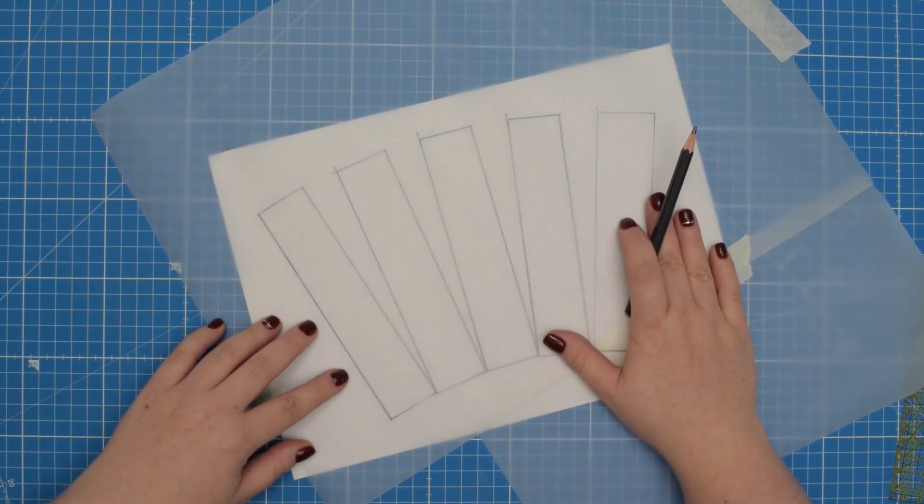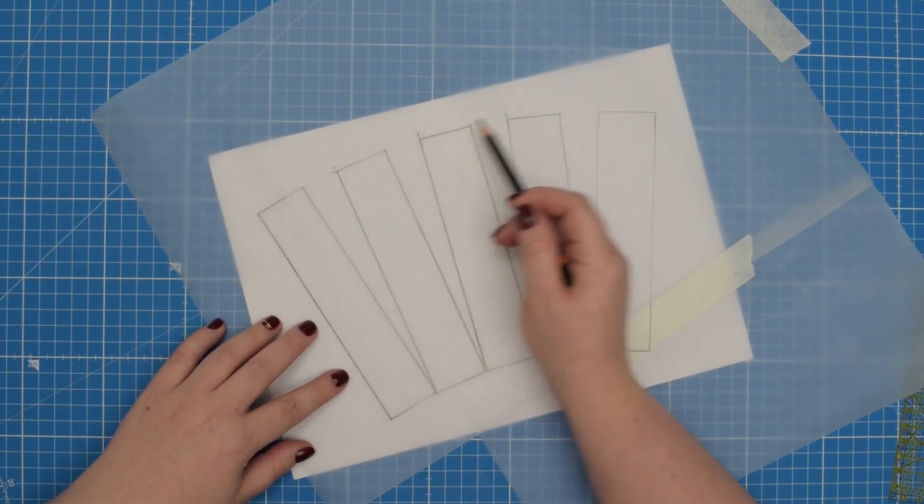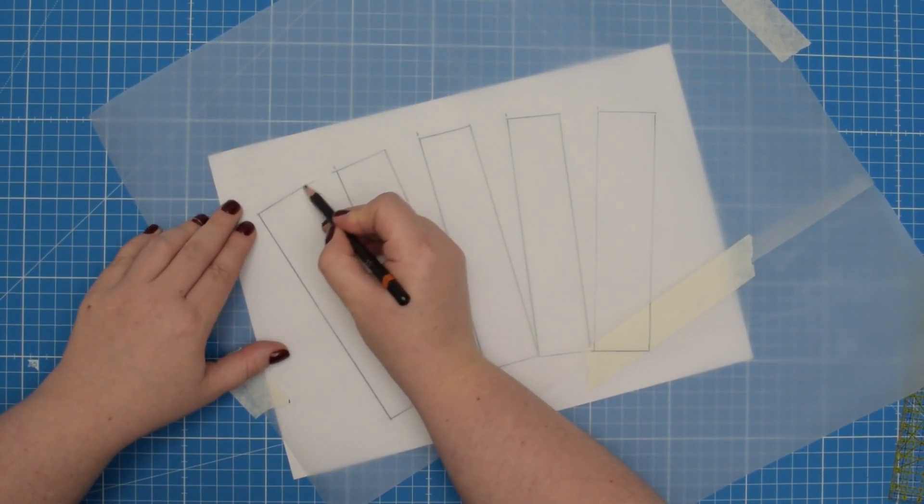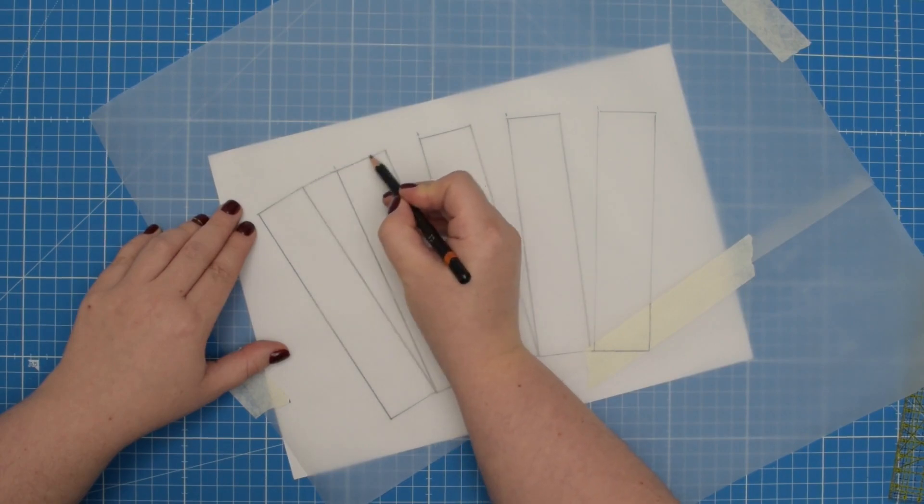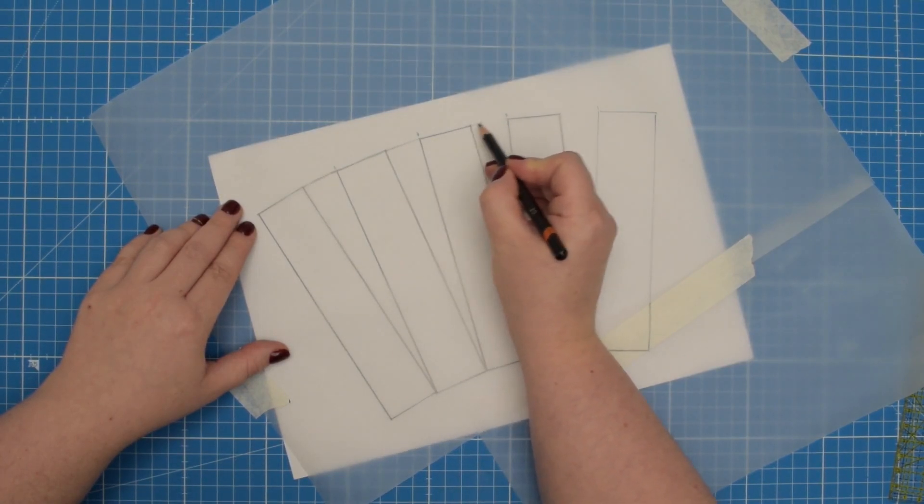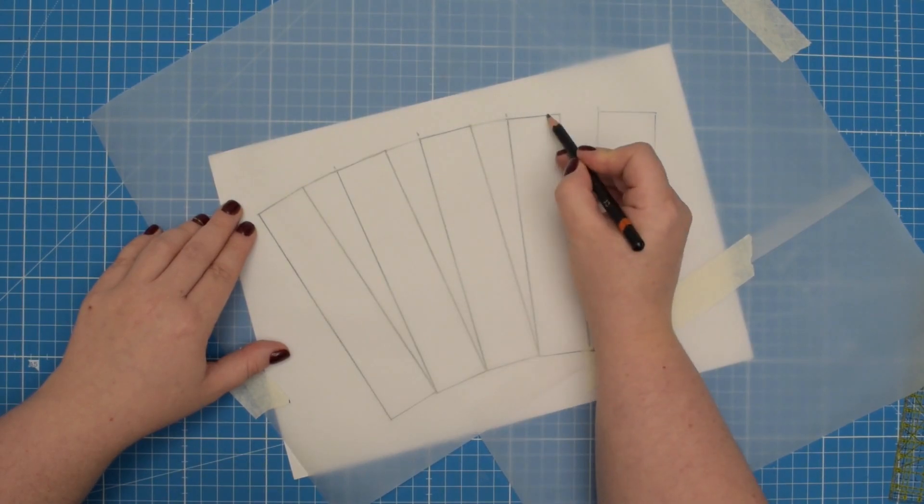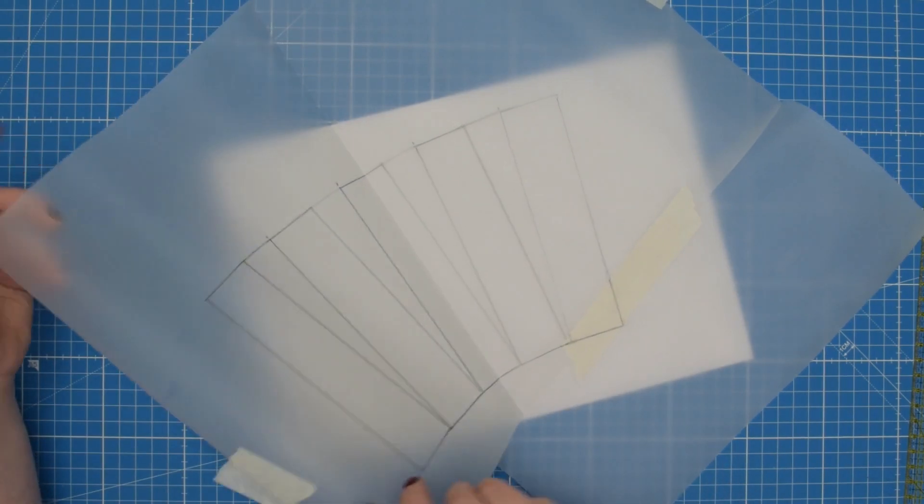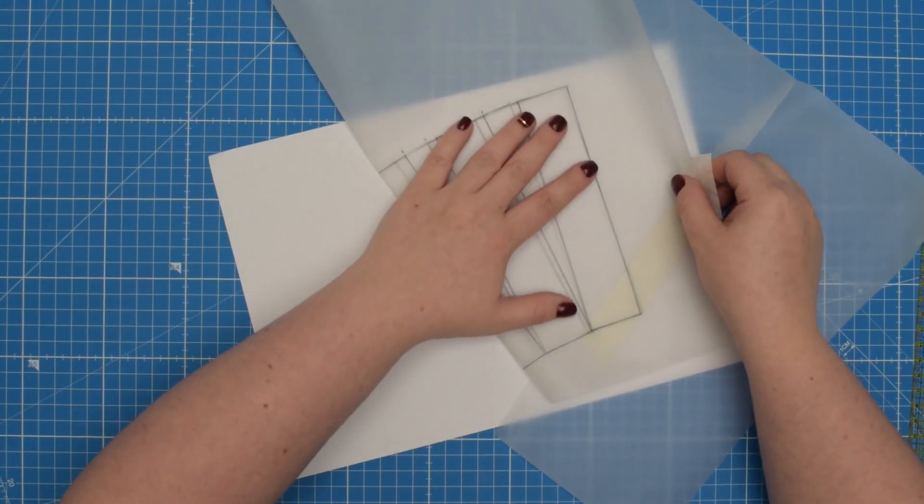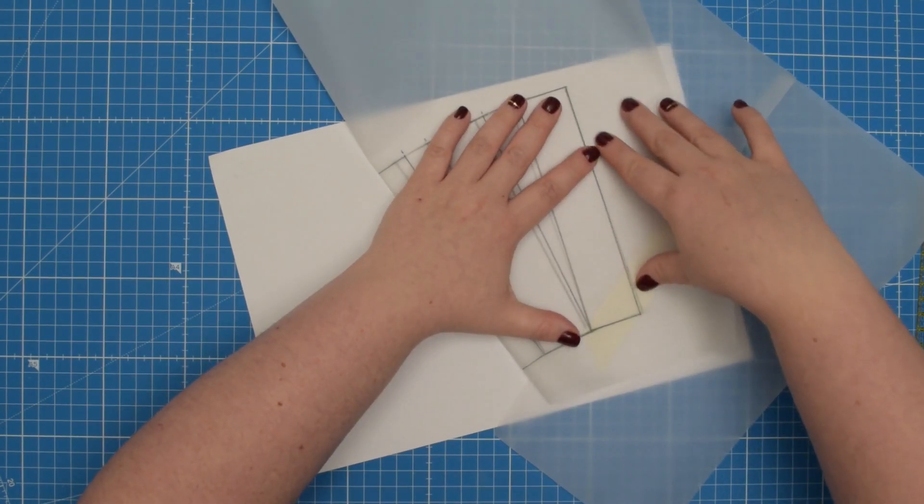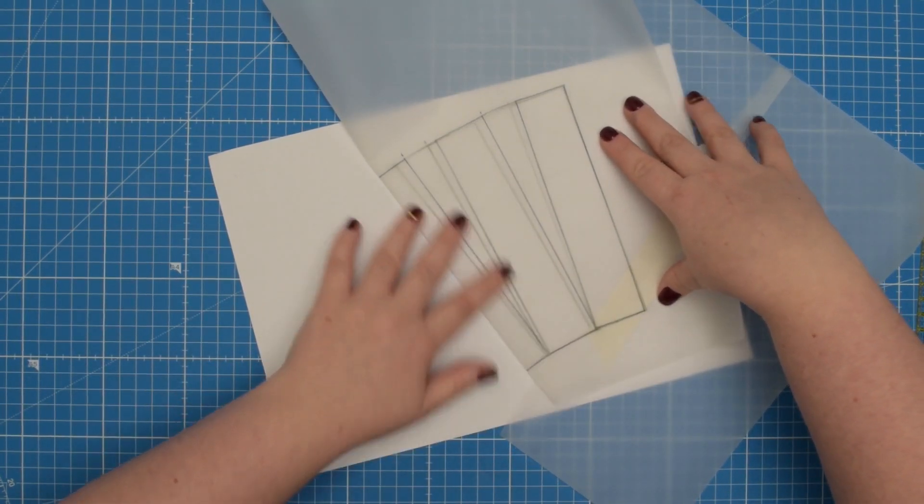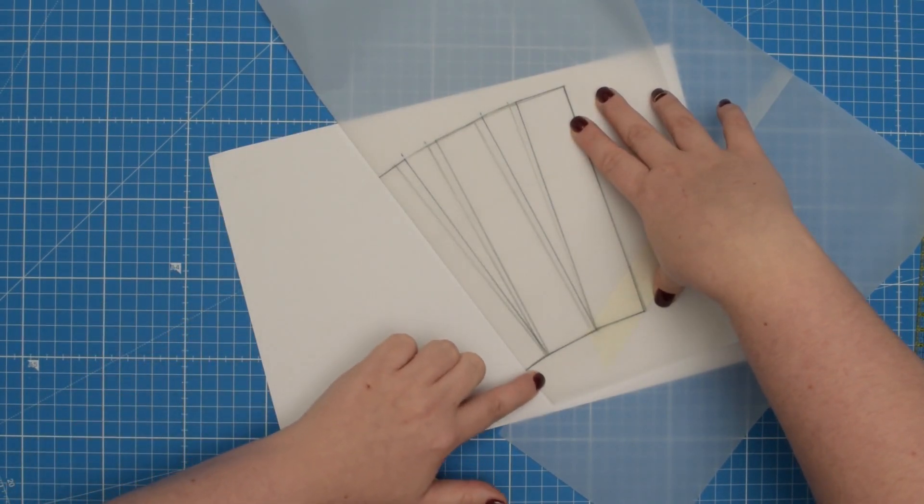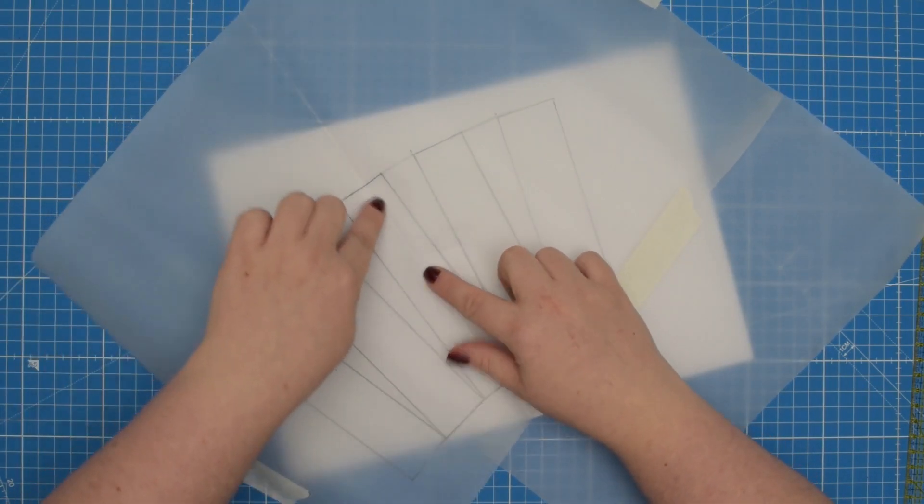Once you traced all your pieces then you're going to smooth the top and bottom seam. So I'm just going to eyeball it and draw a nice curve. If you have one it might be easier to use your curved ruler. What I like to do at this point is to fold my pattern piece in half. First to check if my pattern is symmetrical, and also to find the grain line which is the center of my pattern.